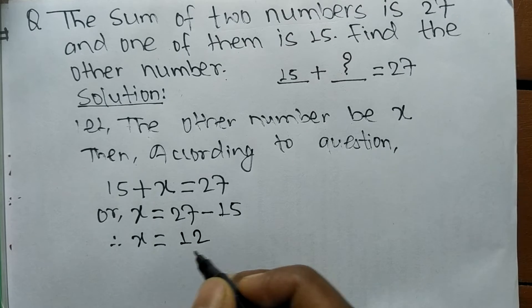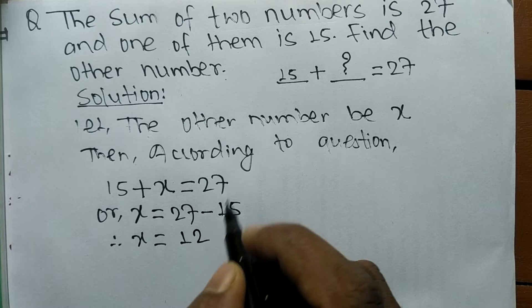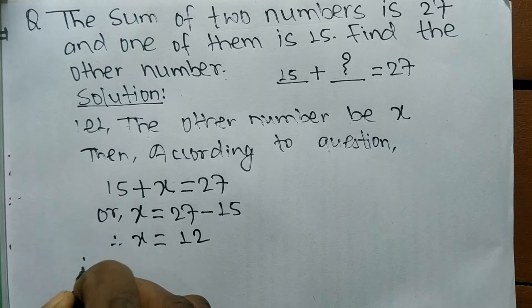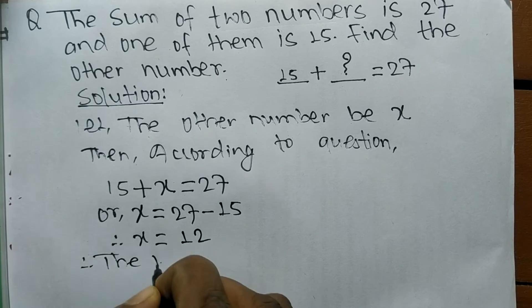We got the value of x, which is equal to 12. The other number we let be x, therefore the required other number is 12.